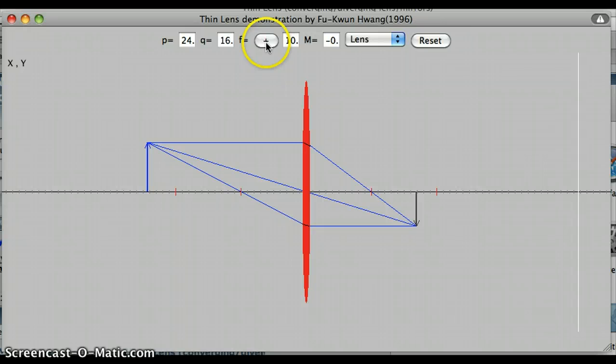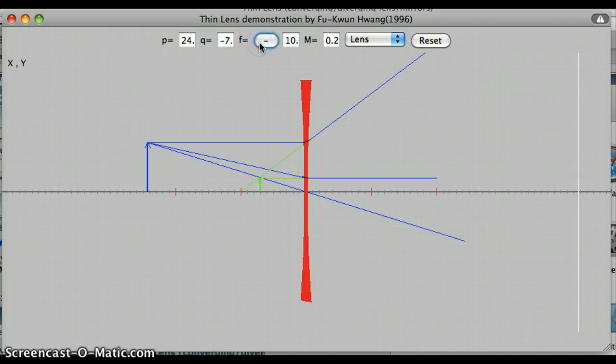I can also switch if I change the focal length from a positive number to a negative number. Now I have a diverging lens. So I can again practice ray diagrams for diverging lenses. Here is that third principal ray that I did not draw in class, but this is what it looks like. Here is our virtual image.